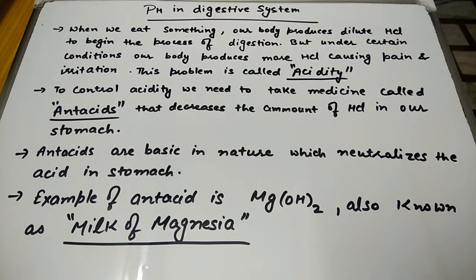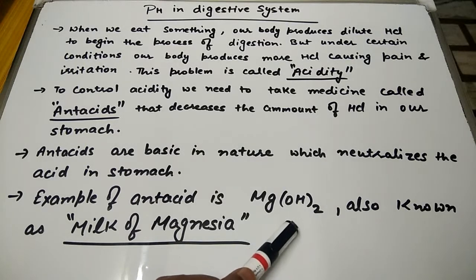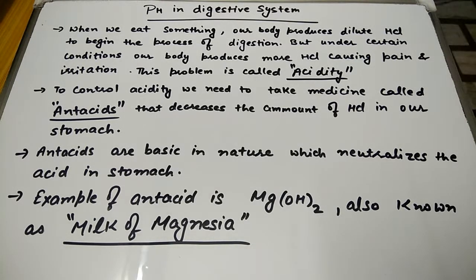We already discussed that acid and base together react to give neutralized salts. So a neutralization reaction takes place when we introduce some basic content into our stomach. An example of an antacid which is very helpful in indigestion is Mg(OH)₂, magnesium hydroxide. It is also known as Milk of Magnesia.